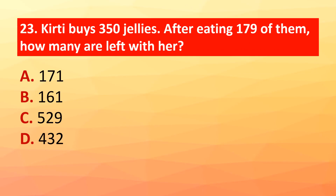Question 23: Keithi buys 350 jellies. After eating 179 of them, how many are left with her? The correct answer is option A: 171.